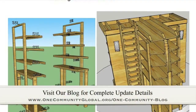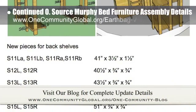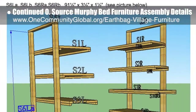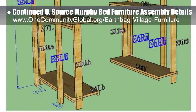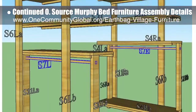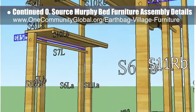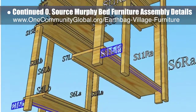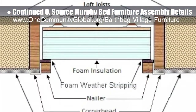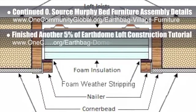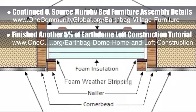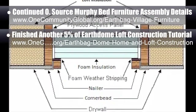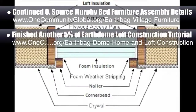This week, the core team working on Highest Good Housing continued progress on the assembly specifics for the open source Murphy bed furniture. We redesigned the two back shelves for the his and hers storage and closet space, and updated and relabeled all associated images. This work is happening behind the scenes and will be part of the EarthBag Village and the upcoming crowdfunding campaign — we estimate it's now 68% complete. We also finished another 5% of the EarthDome loft construction tutorial specifics.